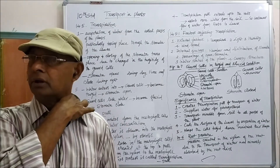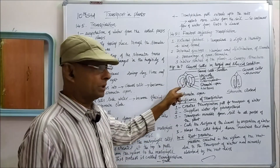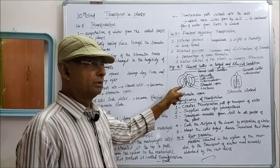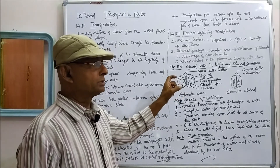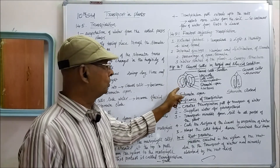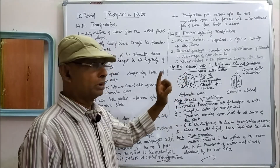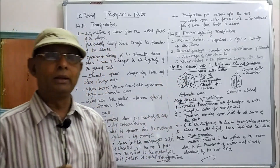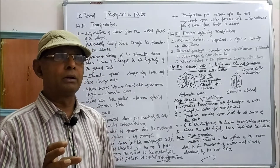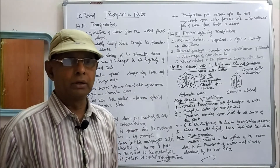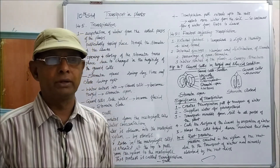What are guard cells? Guard cells are bean-shaped structures present in each stoma. Each stoma consists of two bean-shaped structures called guard cells. Only guard cells play a role in maintaining the opening and closing of the stomata.